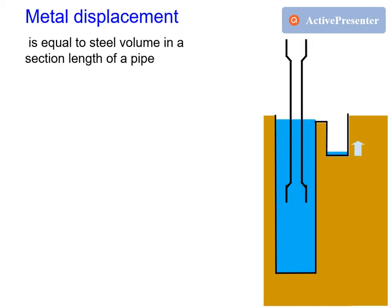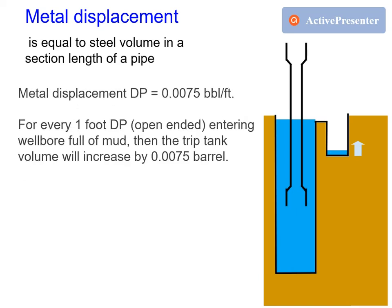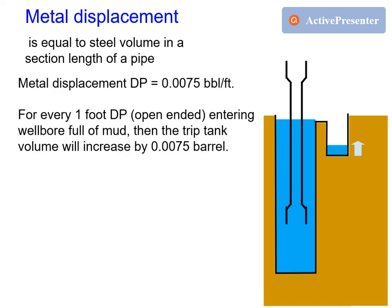Metal displacement is equal to the steel volume in a section length of pipe. If drill pipe metal displacement is 0.0075 barrels per foot, then for every 1 foot of open-ended drill pipe entering a wellbore full of mud, the trip tank volume will increase by 0.0075 barrels.